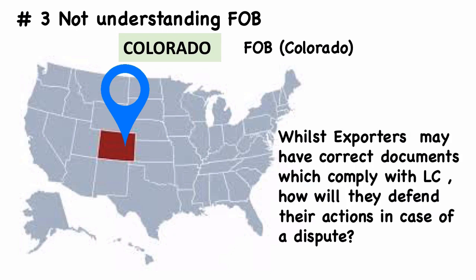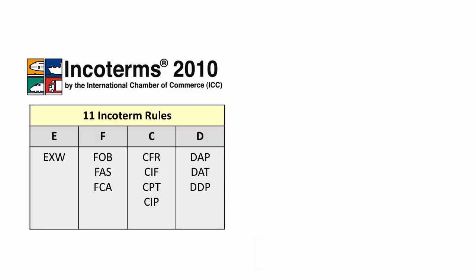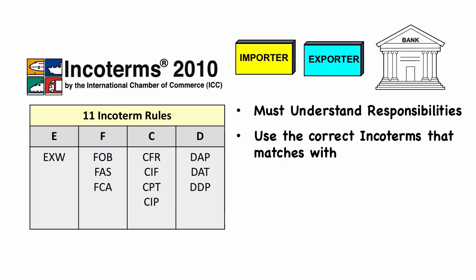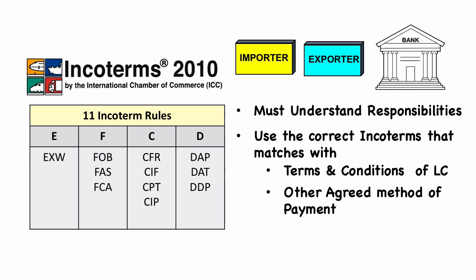He noted that while exporters may have correct documents which comply with the LC, how will they defend their actions in the case of a dispute, because Incoterms only restricts the use of FOB to ocean shipments? Not understanding how the other Incoterms work can also cause problems. International traders and bankers must understand their responsibilities and use the correct Incoterms that match correctly with the terms and conditions of the letter of credit or other agreed method of payment.